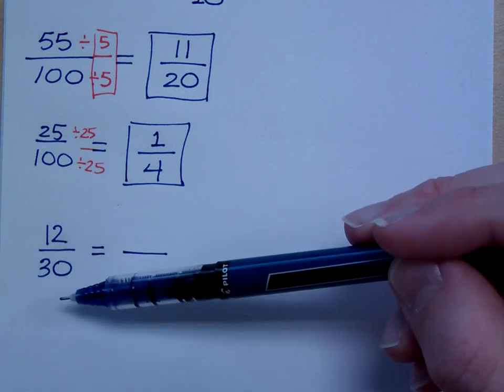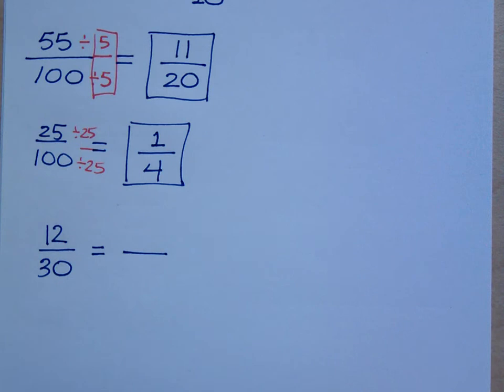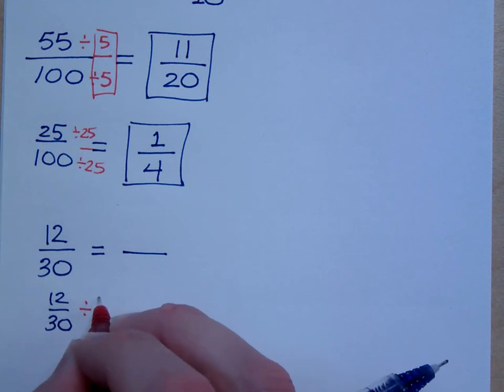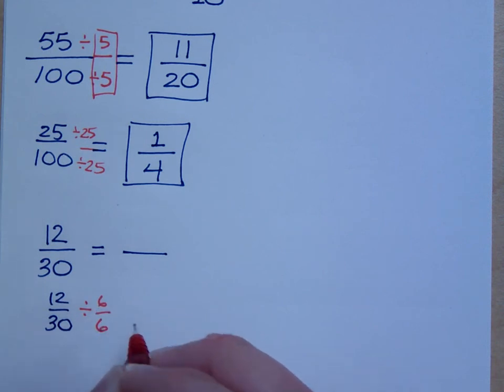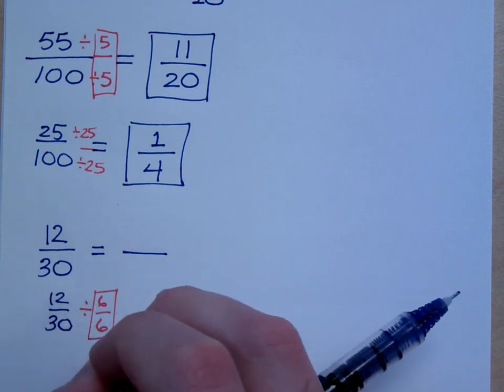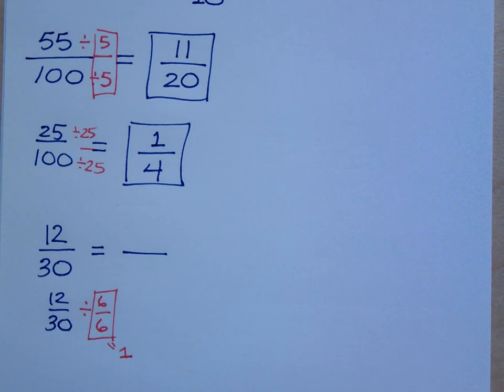6. 6. So, you say 6. So, you're saying that I could take 12 over 30 and divide this by 6 over 6, right? What's 6 divided by 6? 1. 6 divided by 6 is 1. I just want to emphasize that what we're dividing by is 1, right? That's not what I was looking at. I was looking at 12 divided by 6. Sorry.